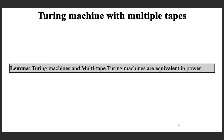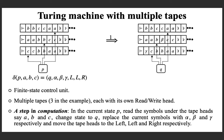The proof of the equivalence is not included in the syllabus and for the interest of time we are not discussing it, but the proof is given in the textbook. If you are interested, please see it — it is actually simple, managed with a multi-track tape. The only point to remember is that the multi-tape Turing machine and the standard Turing machine are equivalent, so it is not adding any power.